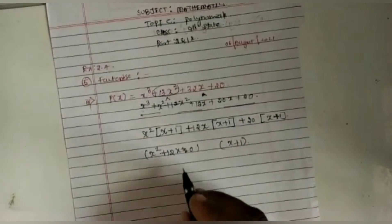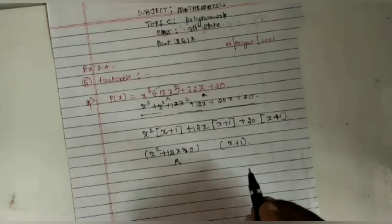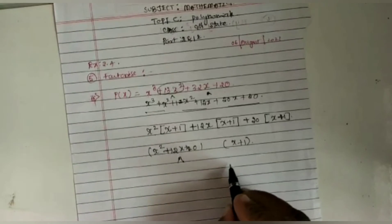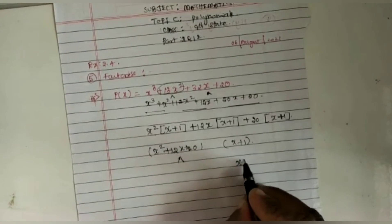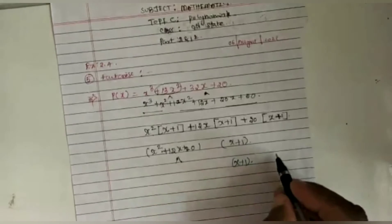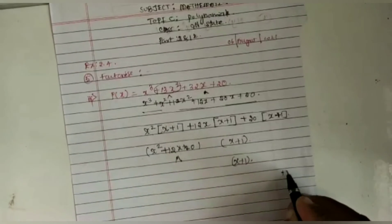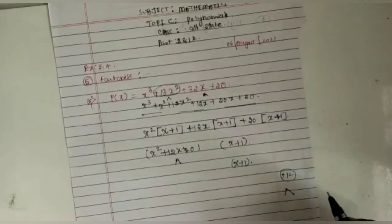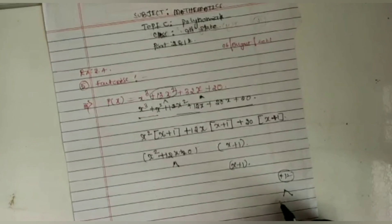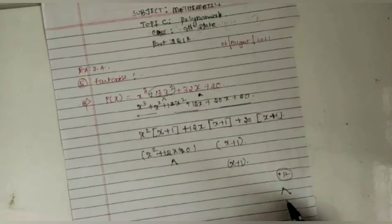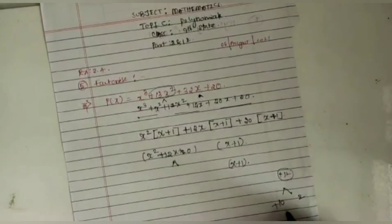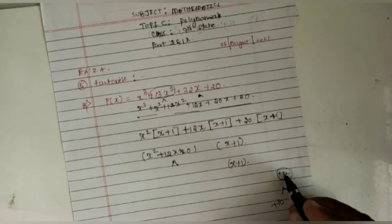Again, I am going to factorize this. X + 1 is the first factor. Here I am going to multiply. This is 5, 2, 0... not 10, it's 20. So the factors of 20...